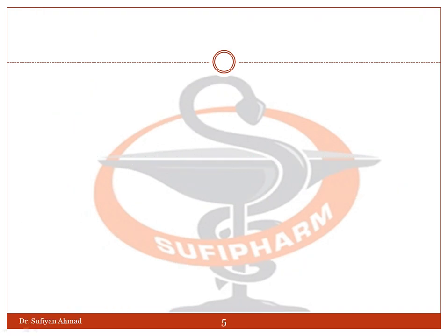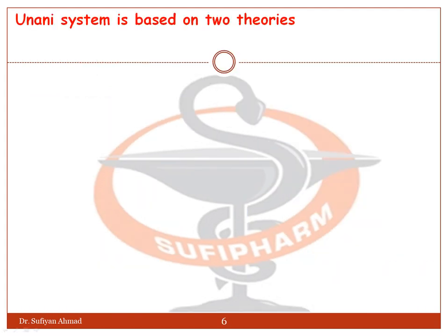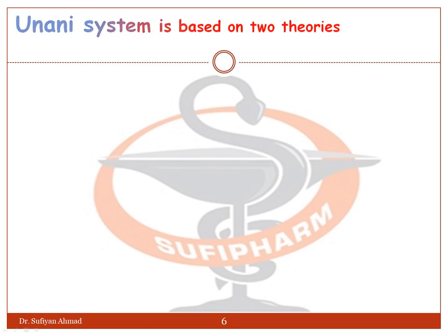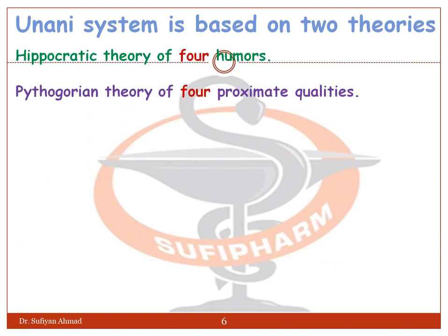The basic principles of Yunani are the Hippocratic theory and the Pythagorean theory. The Hippocratic theory involves blood, phlegm, yellow bile, and black bile. The Pythagorean theory involves hot and moist, hot and dry, cold and moist, and cold and dry. So the Yunani System is based on two theories: the Hippocratic theory of four humors and the Pythagorean theory of four proximate qualities.